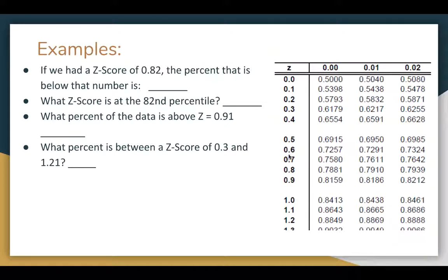So if you had a z-score of 0.82, so you go to 0.8, and then the second decimal, 0.82, that's the 79th percentile. The z-score at the 82nd percentile, we can go to the 82% number. And we're actually right between two numbers. So you can say it's between 0.91 and 0.92, which is 0.915. Above 0.91, so if we look up the z-value for 0.91, you can go over to 0.9 and then over to 1. It's 81% below it, so it's about 19% above it.